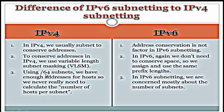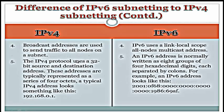Third difference: using /64 subnets, we have enough addresses for hosts, so we never really need to calculate the number of hosts per subnet. In IPv6 subnetting, we are concerned mostly about the number of subnets. Fourth difference: broadcast addresses are used to send traffic to all nodes on a subnet in IPv4, but IPv6 uses a link-local scope all-nodes multicast address instead.